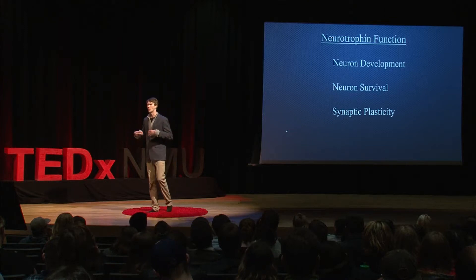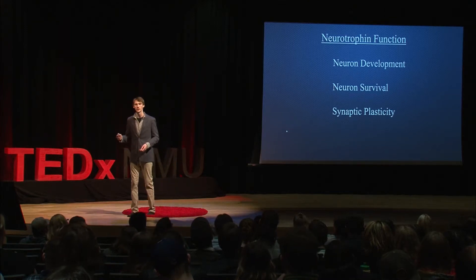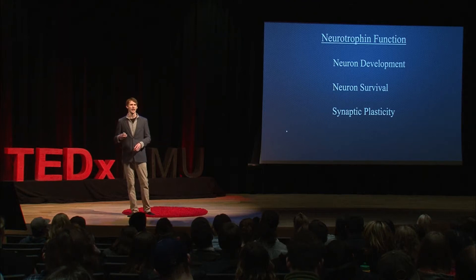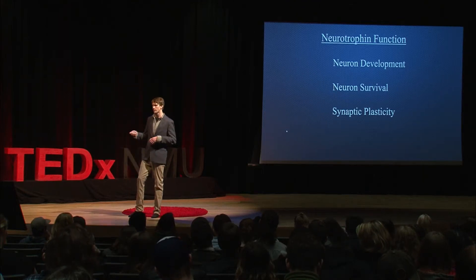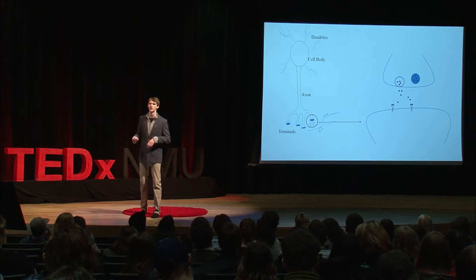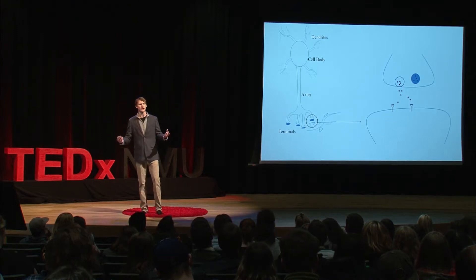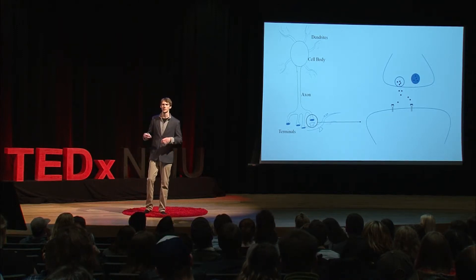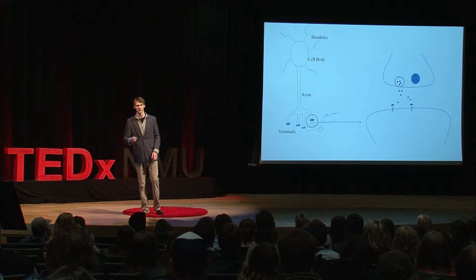BDNF is involved in many neurological functions, such as neuron development, neuron survival, and synaptic plasticity. For BDNF to perform its functions, it must first be released at the synapse. This is very similar to a neurotransmitter being released — it's released from a vesicle into the synaptic cleft.